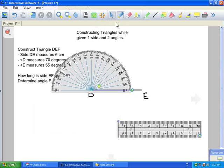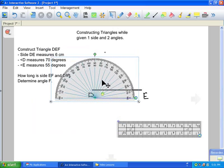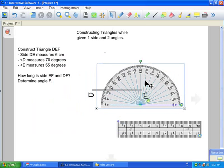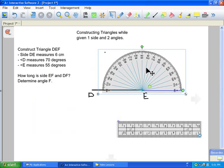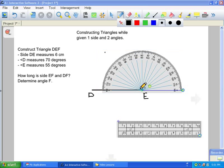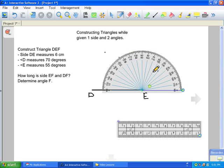Now we're going to take the protractor and we're going to move it across to E, because we have our third piece of information, and angle E measures 55 degrees. And since this is an acute angle, we're going to have to go to the left side of the protractor this time. And once again, we're going to find where 55 degrees is, and we're going to put our dot right there at 55 degrees. Now we can move our protractor away.